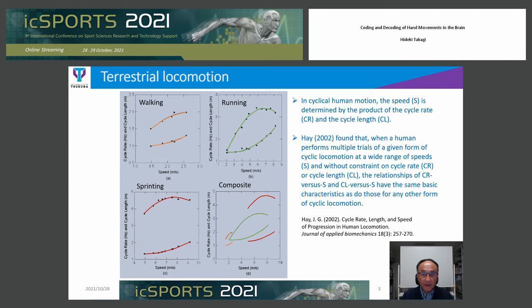As we all know, in cyclical human movement, speed S is determined by the product of cycle rate CR and cycle length CL.